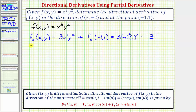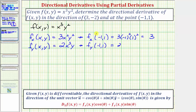Now we'll find the partial derivative with respect to y. We differentiate with respect to y, treating x as a constant. The derivative of y² with respect to y is 2y, so the partial derivative with respect to y is 2x³y. Evaluating at the point (-1, 1), we have two times (-1)³ times one, which gives us negative two.